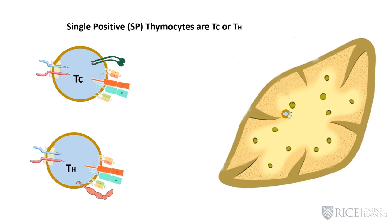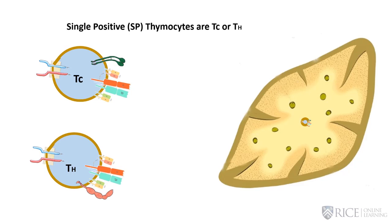Picking up where we left off at the end of the last clip, we had made TC and TH cells. They have, respectively, CD8 and CD4, and they are therefore single positive. We're ready to make sure that they go through this last round of quality control, which means they have to move into the medulla of the thymus—an environment that will allow for the most complete and thorough form of negative selection we can accomplish.